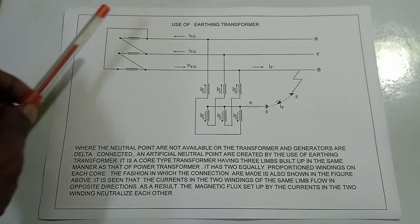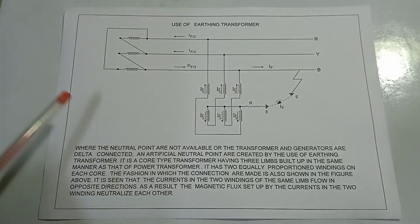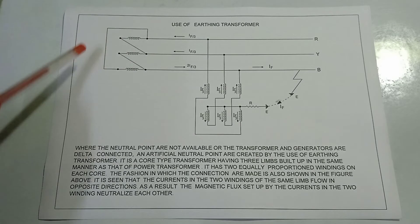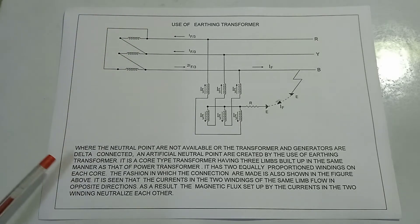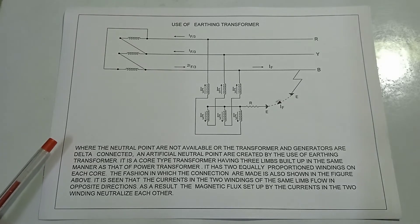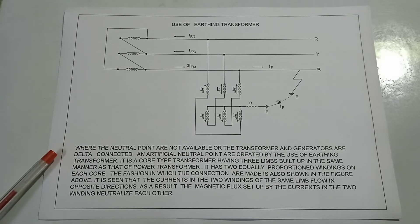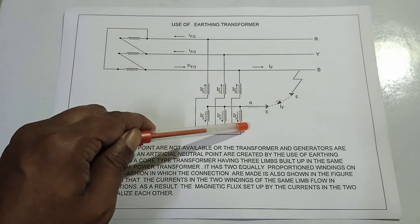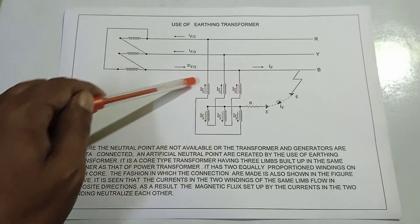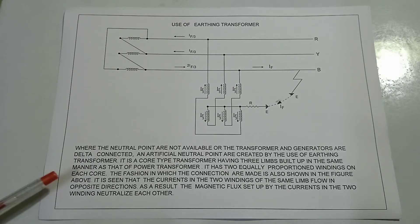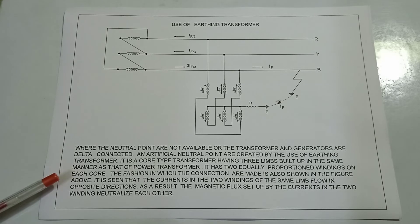Next is the use of an earthing transformer. Where neutral points are not available — such as when transformers and generators are delta connected — artificial neutral points are created using an earthing transformer. It is a core-type transformer having three limbs built in the same manner as a power transformer, with two equally proportioned windings on each core.